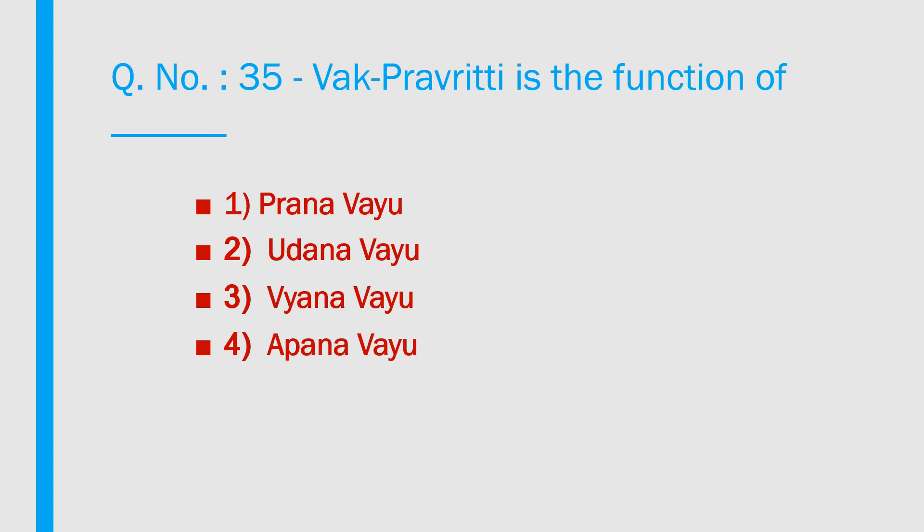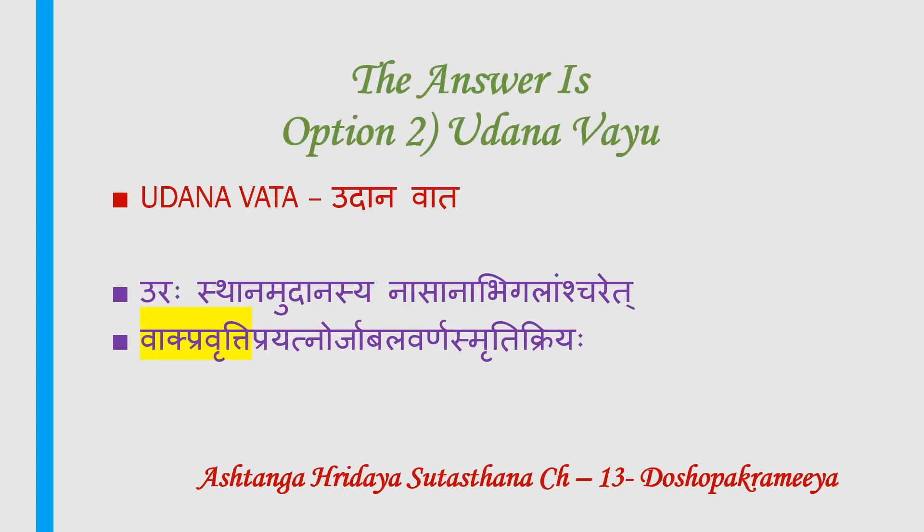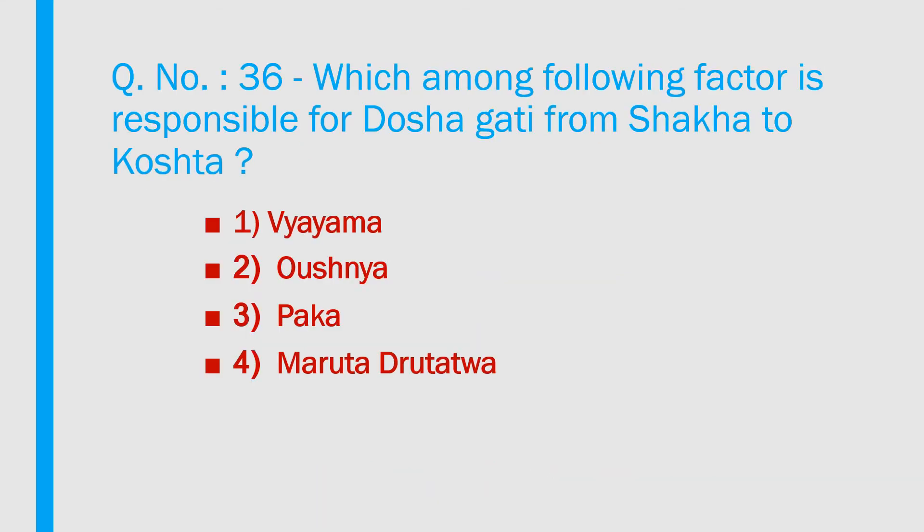Question number 35: Vak pravarti is the function of which vayu? 1) Pranavayu, 2) Udhanavayu, 3) Vyanavayu, 4) Abhanavayu. Answer is option 2 — Udhanavayu. Udhanavayu is located in uras, murdha, nasa, nabhi, and ghala; its functions include vak pravarti, prayatna, urja, bala, varna, smriti and other kriya. Reference: Ashtanga Hridaya Sutrastana, chapter 30.